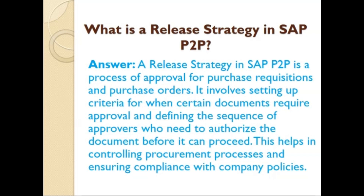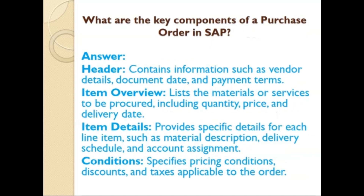What are the key components of a purchase order in SAP? Header: contains information such as vendor details, document dates, and payment terms. Item Overview: lists the materials or services to be procured, including quantity, price, and delivery date. Item Details: provide specific details for each line item such as material description, delivery schedule, and account assignment. Conditions: specific pricing conditions, discounts, and taxes applicable to the order. Thank you for watching, have a nice day.